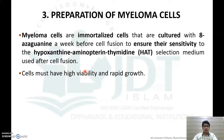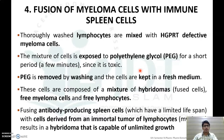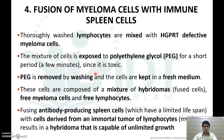In the fourth step — fusion of myeloma cells with immune spleen cells — lymphocytes isolated from the mice are thoroughly washed and mixed with the HGPRT-defective myeloma cells. The mixture is exposed to polyethylene glycol (PEG) for a short period of time since it is toxic, then PEG is removed by washing and cells are kept in fresh media. These cells are a mixture of hybridoma cells (fused cells) as well as free myeloma cells and free lymphocyte cells.